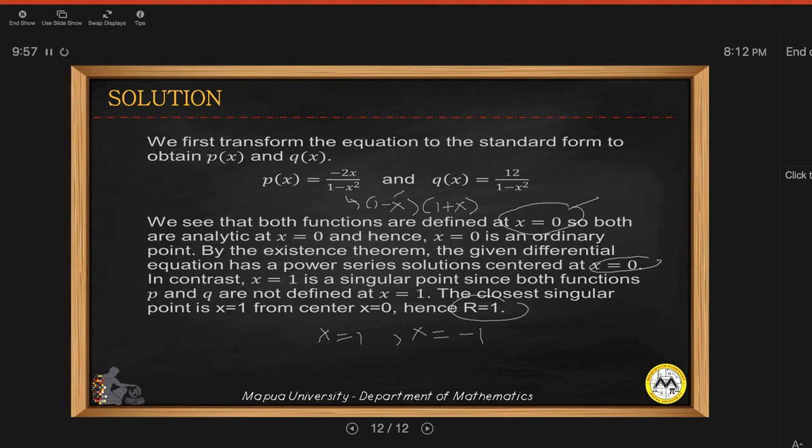So this is the center of x equals 0. And then you have negative 1 here. And then this is positive 1. So these are the two singular points. And then this is your radius.